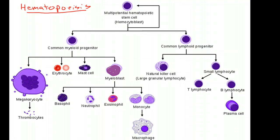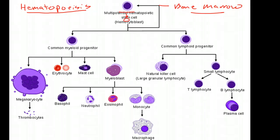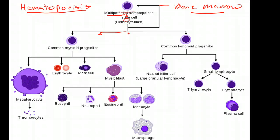With hematopoiesis, it begins in bone marrow with progenitor stem cells. This chart is a very simplified version — the stem cell goes through many, many generations of cells, actually two or three specific generations, before it gets down to the point where it divides off. We have what's called a pluripotent stem cell, or multi-potential hematopoietic stem cell, meaning it has not yet been differentiated into a specific line and can still make itself into lymphoid cells or myeloid cells.